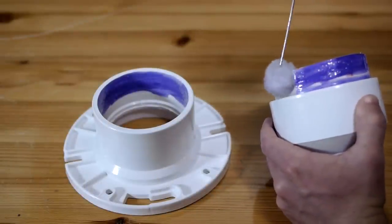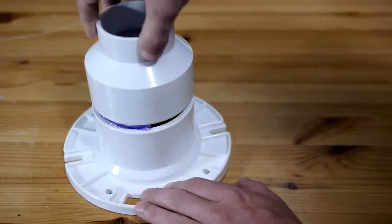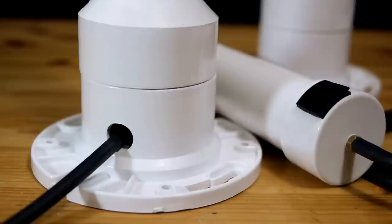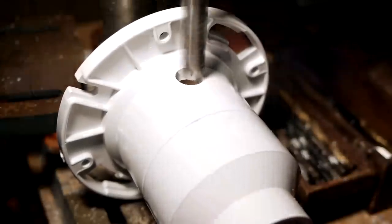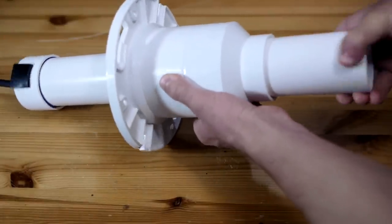With another swab of primer and cement, the adapter can be glued into the closet flange. The base now only needs to have a hole drilled just above the flat portion to allow the vacuum line to pass through. With this done, the base is slid over the top of the pump body.